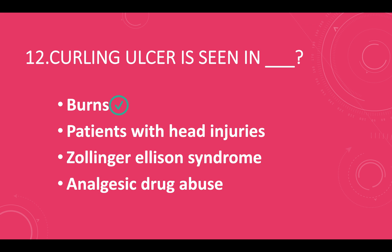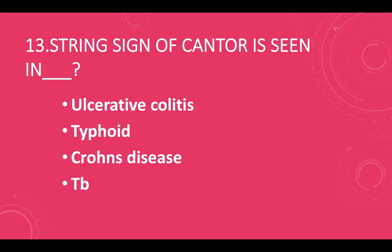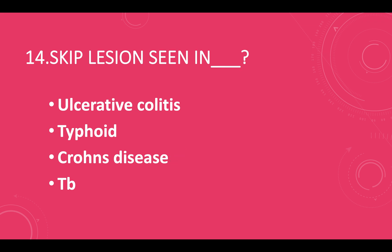String sign of Kantor is seen in: option A — ulcerative colitis, option B — typhoid, option C — Crohn's disease, option D — tuberculosis. Answer: option C, Crohn's disease.